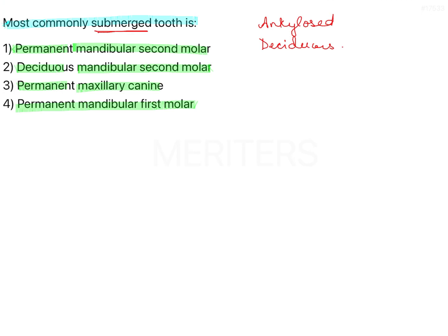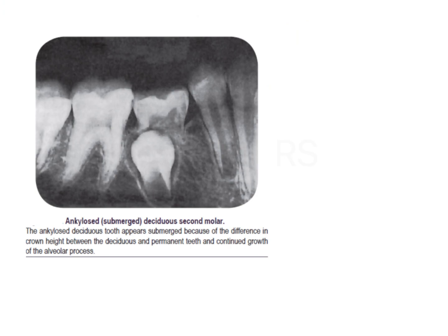Normally in the eruption and shedding pattern, the tooth will erupt and begin root resorption, but at one point it becomes ankylosed — fused to bone — and fails to fall out. It does not exfoliate. Because of this, the permanent tooth developing underneath does not get space to erupt. The permanent tooth is locked in position, but the alveolar process continues to grow, so surrounding teeth appear higher than the plane of occlusion and this tooth appears submerged — which is why the terminology is used.